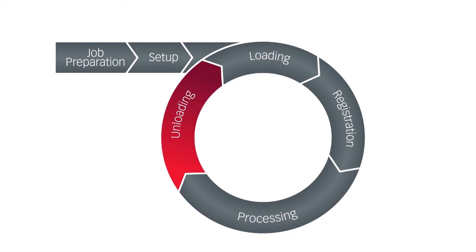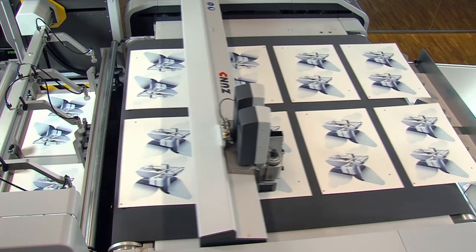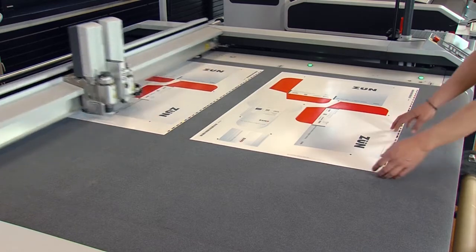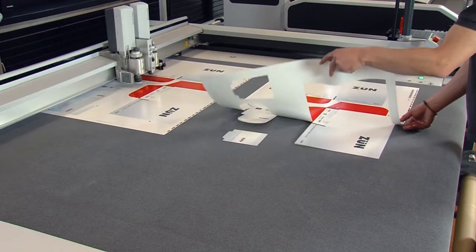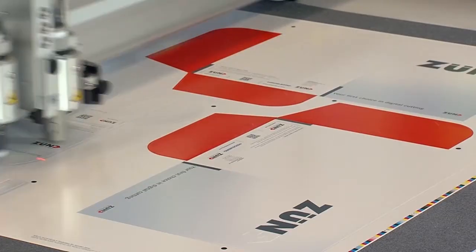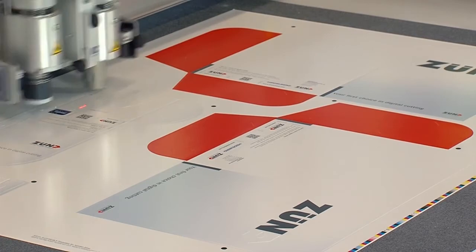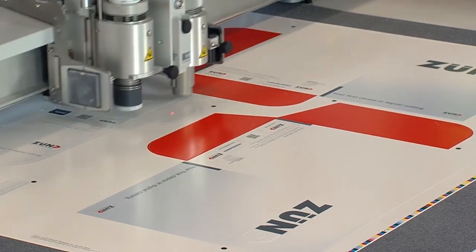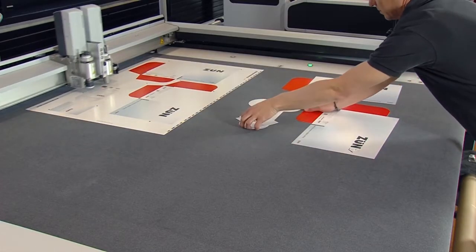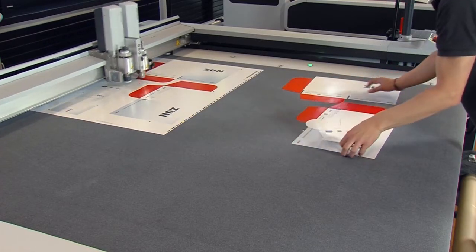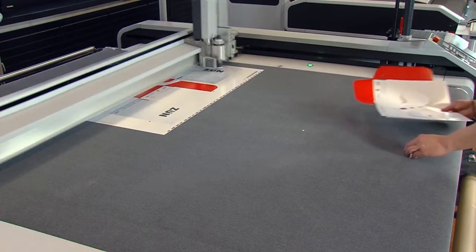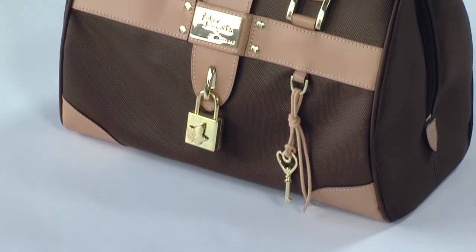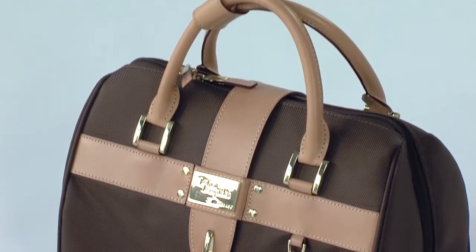Fully automated offload systems perfectly round out the digital finishing workflow. However, even manual unloading benefits from Sund innovation. For example, with the optional tandem vacuum, cut pieces can be removed from the work area while processing continues without interruption. Quality and productivity count.